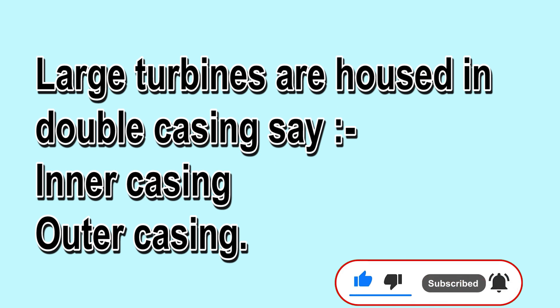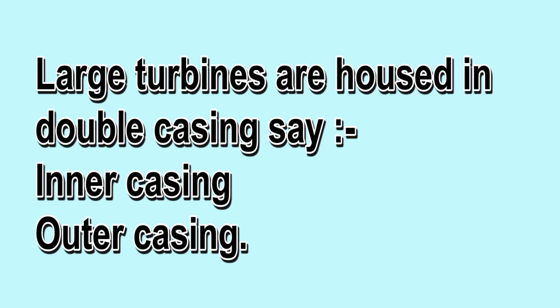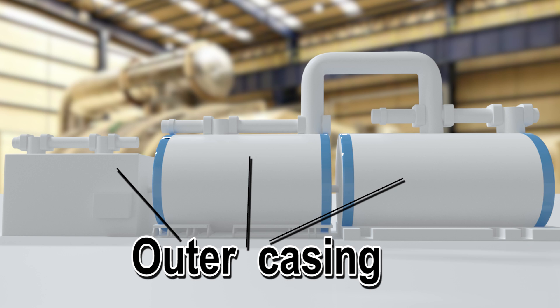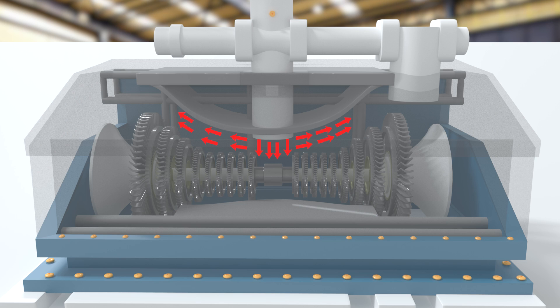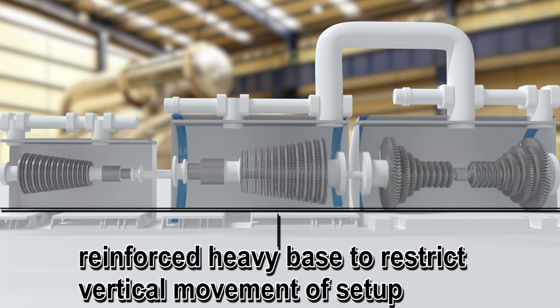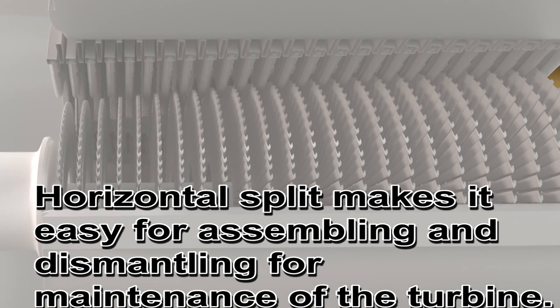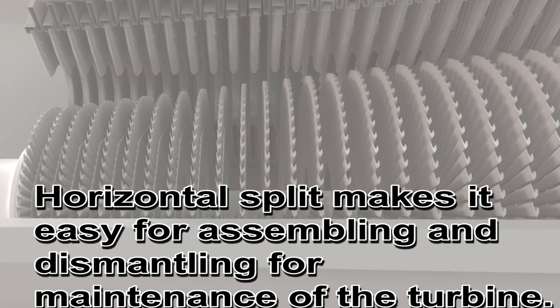Large turbines are housed in double casings — an inner casing and an outer casing. The role of the inner casing is to direct the steam through the turbine. The lower casing is supported with a reinforced heavy base to restrict vertical movement of the setup and maintain alignment of the machine. A horizontal split makes it easy for assembling and dismantling for maintenance of the turbine.